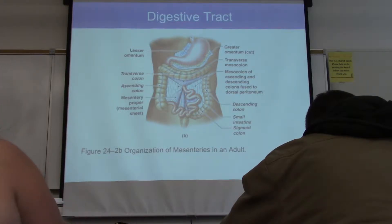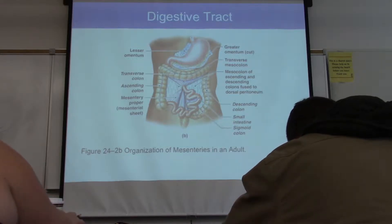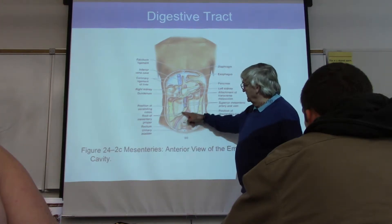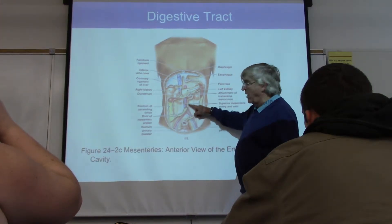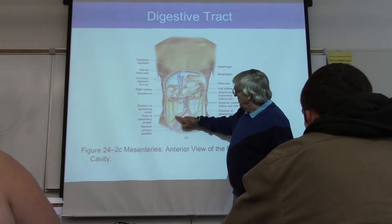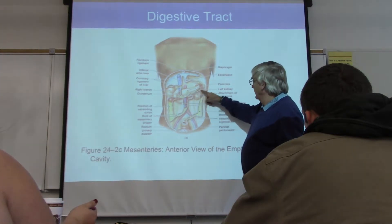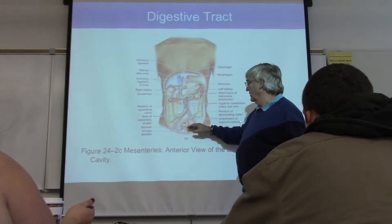They call it a mesentery. The lesser omentum I would call a mesentery because all the blood vessels to that part of the stomach are coming in through there. If you took all those guts out of there, this is what you'd have left. And what you'd see is this long attachment of the mesentery proper here. This is the long attachment of the ascending colon, transverse colon, the descending colon.